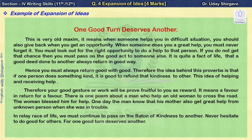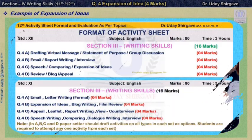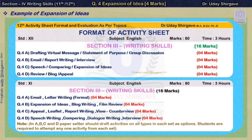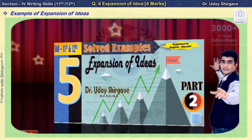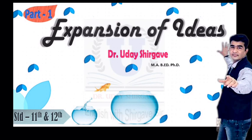So, at this point we have covered five simple examples of expansion of ideas. Along with these, you can add more examples, keeping in mind that the answer should be written in around 100 to 150 words for four marks. I am confident that with these five examples, you will get an overall idea of how to write expansion of ideas.